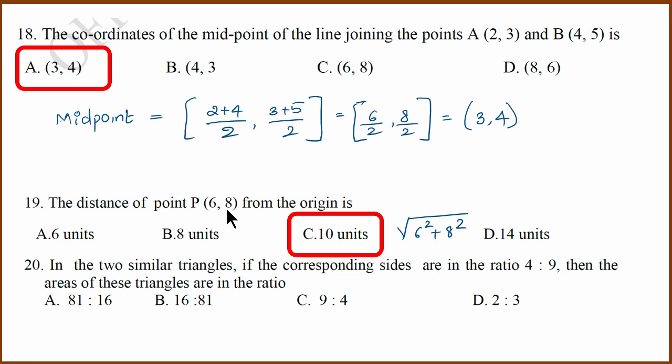20th question is a similar triangle question. Corresponding sides are 4 is to 9. That means area will be square of it, which means 4 square is to 9 square, which is 16 is to 81.